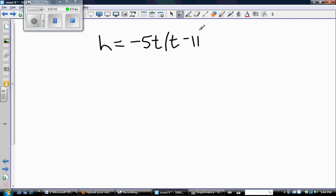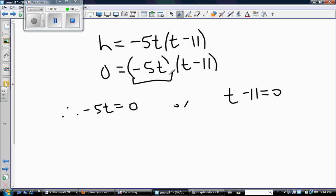Using the principle of zero multiplication, I say therefore negative 5t equals zero or t minus 11 equals zero. I take each of my factors and set them equal to zero. Now I have two little pieces of math to solve. Here, divide by negative 5, and I get t equals zero. There's one root. Here, add 11, so I get t equals 11. So there's my two roots.